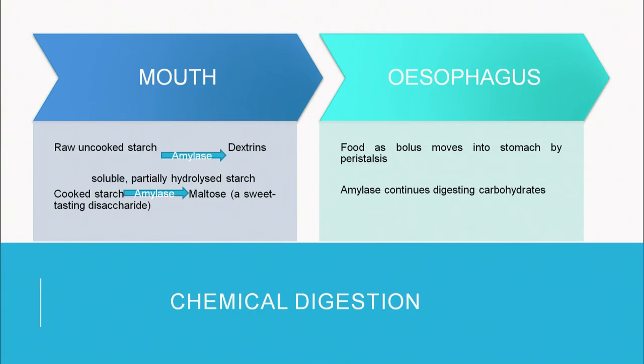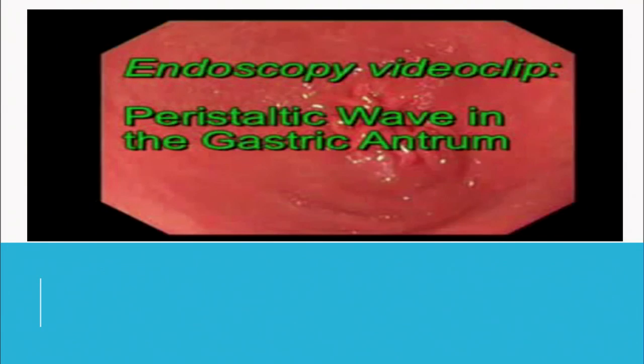In the mouth, the chemical digestion of raw or uncooked starch occurs with the enzyme amylase, converting it into dextrins and soluble, partially hydrolyzed starch. Cooked starch is partially hydrolyzed by the enzyme and converted into maltose, which is a disaccharide made up of two units of monosaccharides. In the esophagus, chemical digestion is continued by the salivary amylase produced in the mouth, and it keeps working on the starches as the food bolus moves into the stomach by peristaltic movement.